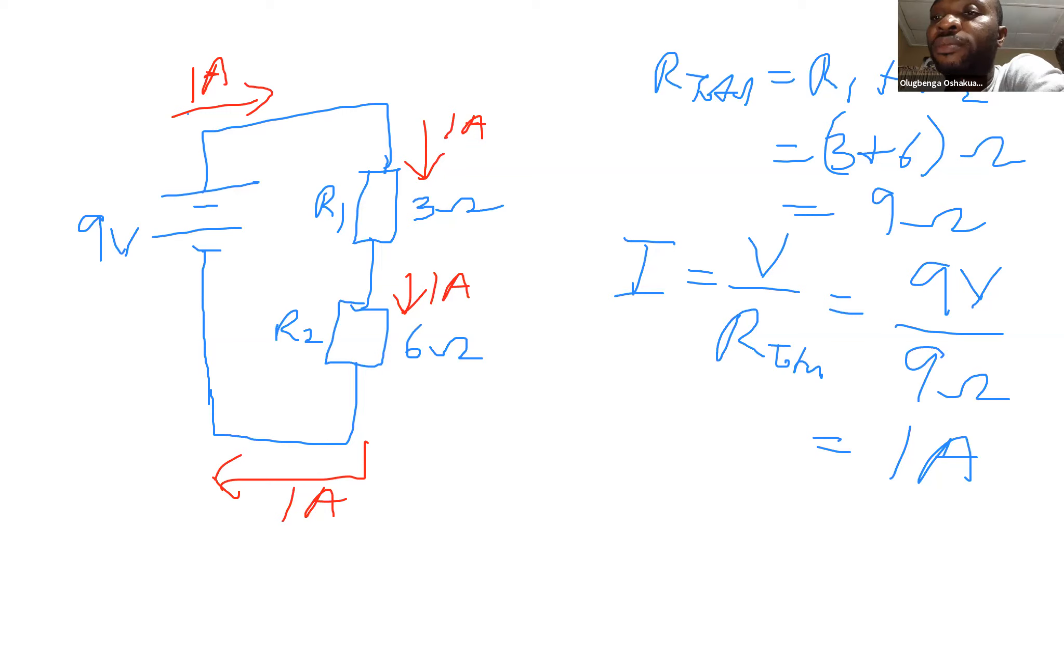When 1 ampere flows through resistor R1, we can determine what is the voltage drop across R1. The voltage drop across resistor R1, we can still see we are even applying Ohm's law right here. We are still applying Ohm's law, V equal to IR.